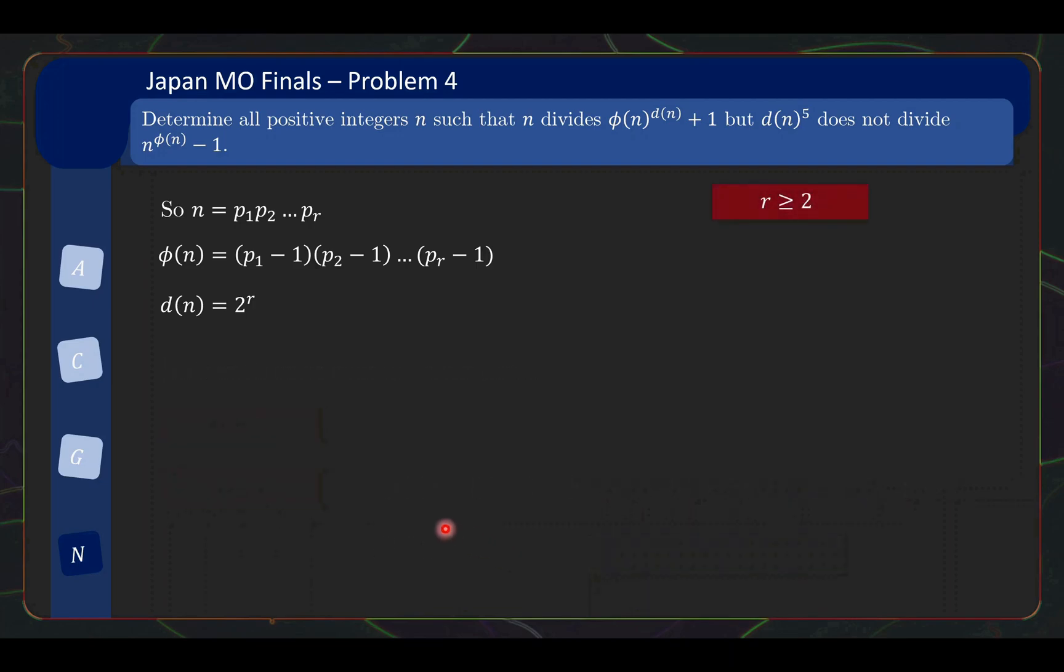And the reason why we check this annoying case separately is now we can establish that there's at least two prime factors in n. And why is this important? Well, it tells us that in φ(n), right, at least one of the prime factors is not 2, which means at least one of the terms here is even, which means φ(n) is even, which means this thing is odd. You cannot have even divide odd. So it tells us that n is forced to be odd. It means none of the prime factors must be equal to 2.